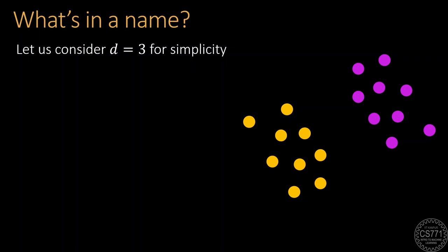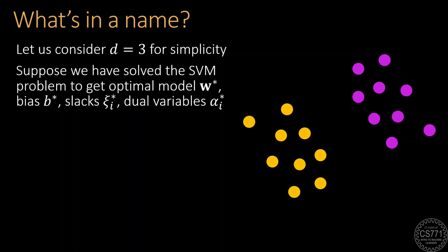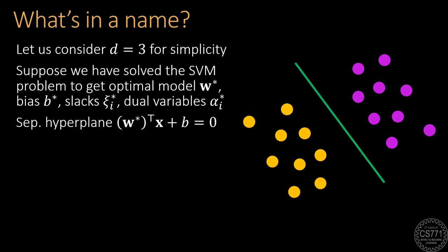We are now ready to reveal the secret behind the name SVM. For sake of simplicity, let us consider a setting where the feature vectors x_i and the model w are all three-dimensional. Suppose we have solved the SVM problem to get the optimal values of model w*, bias b*, slacks xi*, and the dual variables alpha*.